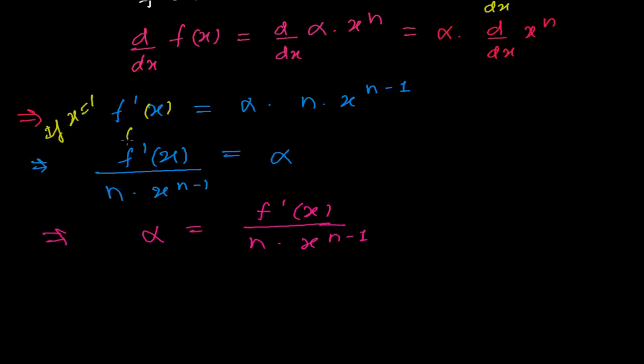So what we will get f'(1)? We will be getting alpha times n times x to the power 1 minus 1. That is alpha times n times x to the power 0. That is alpha times n. So what we get here, alpha times n is equals to f'(1).